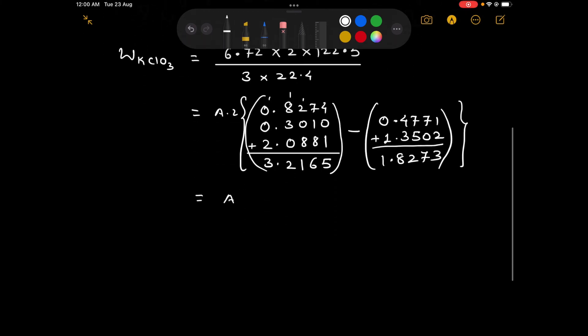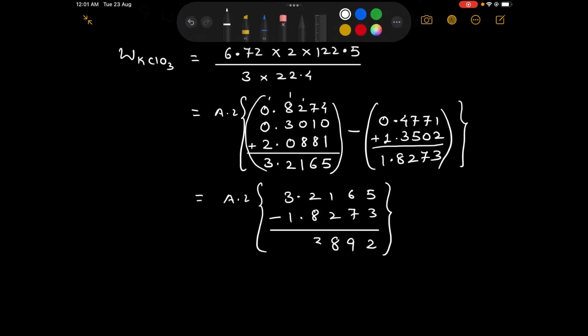Now let us subtract these two: 3.2165 minus 1.8273. This is 5 minus 3 is 2, 16 minus 7 is 9, 10 minus 2 is 8, 11 minus 8 is 3, and 2 minus 1 is 1.